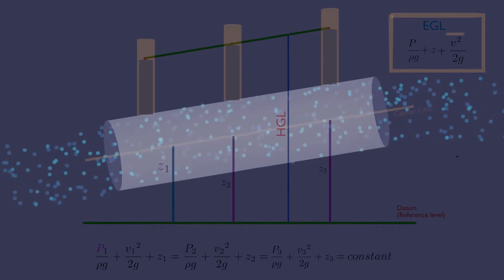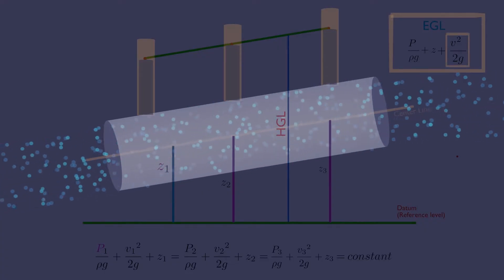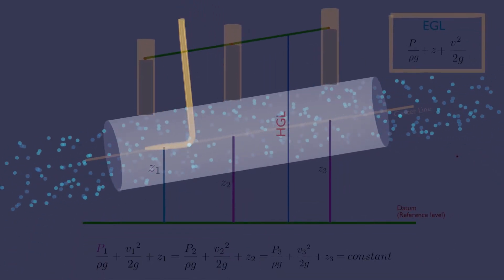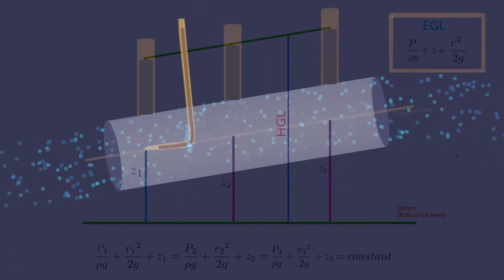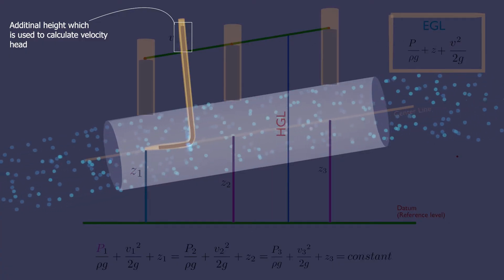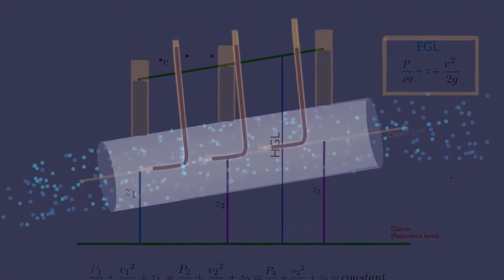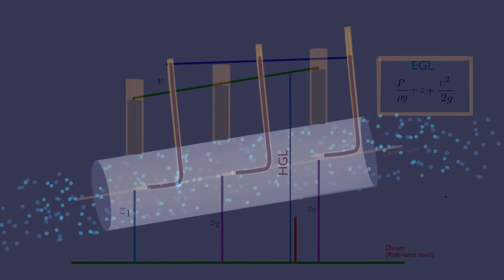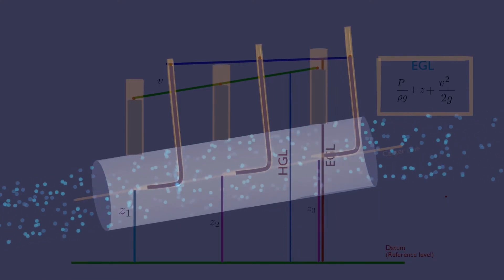In order to visualize kinetic energy, which is related to the velocity of water, we need a pitot tube. The extra height the water column travels is related to the velocity of water. If you draw the curve, you will get the total energy, also called the energy grade line.